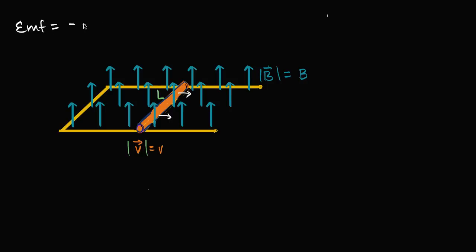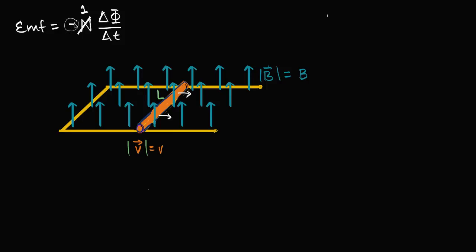I'm going to rewrite Faraday's Law right over here. Faraday's Law: negative n times our change in flux over change in time. The n is the number of loops we're talking about, so in this case n is just going to be one. The negative sign reminds us that this EMF is going to cause a current to go through this loop, and the magnetic field induced by that current will go against the direction of our change in flux. What we really care about is our change in flux over change in time.